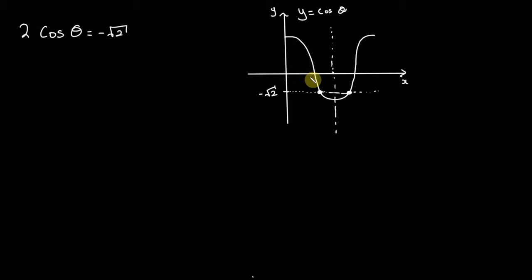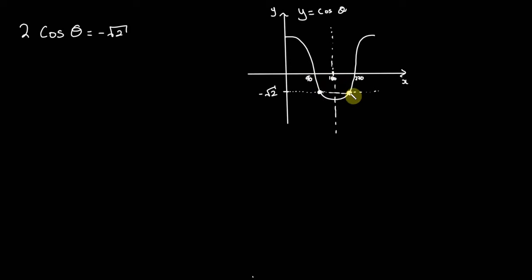For y equals cos theta with no transformations, we know this point is 90 degrees, this minimum point is 180, and this point is 270. So taking a graphical approach: once we find our first solution and we know the angle between 90 and that solution, we can add that to 180 to get the second solution. If our interval is bigger, we can extend that logic to multiples of 360, or 2 pi. That's one graphical method using symmetry.